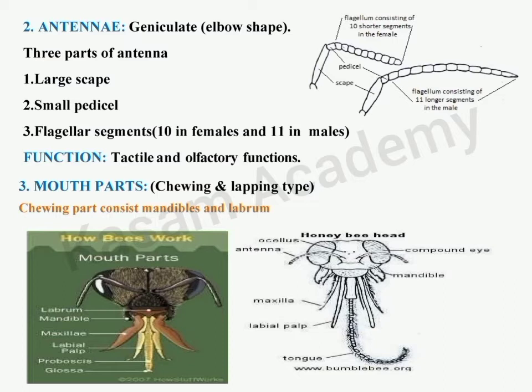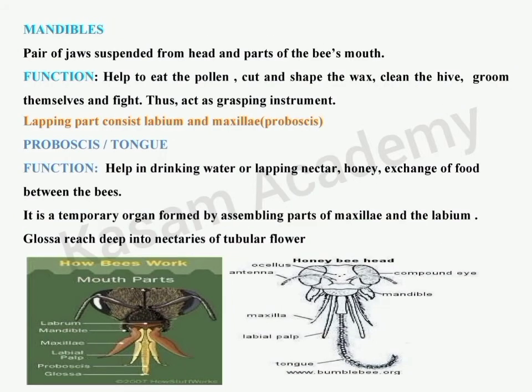The antennal function is to feel or touch, and also to detect smell. This guides the honeybee and also helps measure flight speed. Coming to the mouth parts, the honeybee has a chewing and lapping type of mouth part. The chewing type consists of mandibles and labrum, and the lapping type consists of the tongue, which has the maxilla and labial parts forming the proboscis.